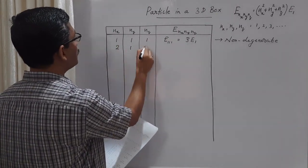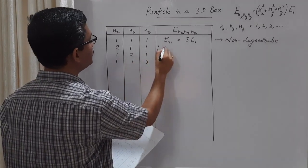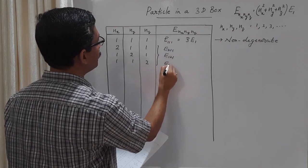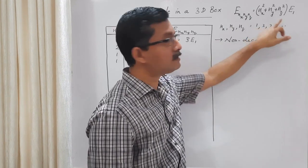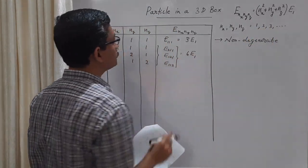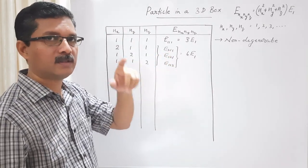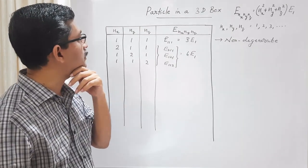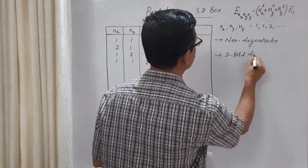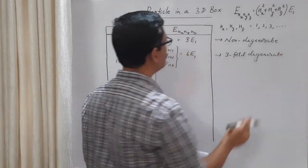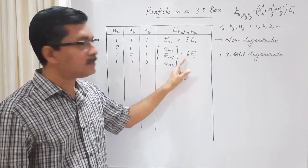The next possibility is nx=2, ny=1, nz=1. But the same energy can be obtained for (1,2,1) and (1,1,2). These three states — E₂₁₁, E₁₂₁, E₁₁₂ — all correspond to 4+1+1 = 6E₁. Corresponding to each combination of nx, ny, nz we have one eigenfunction, so there are three eigenfunctions for this eigenvalue. This state is three-fold degenerate. This is the first excited state of the particle in a three-dimensional box with energy 6E₁.